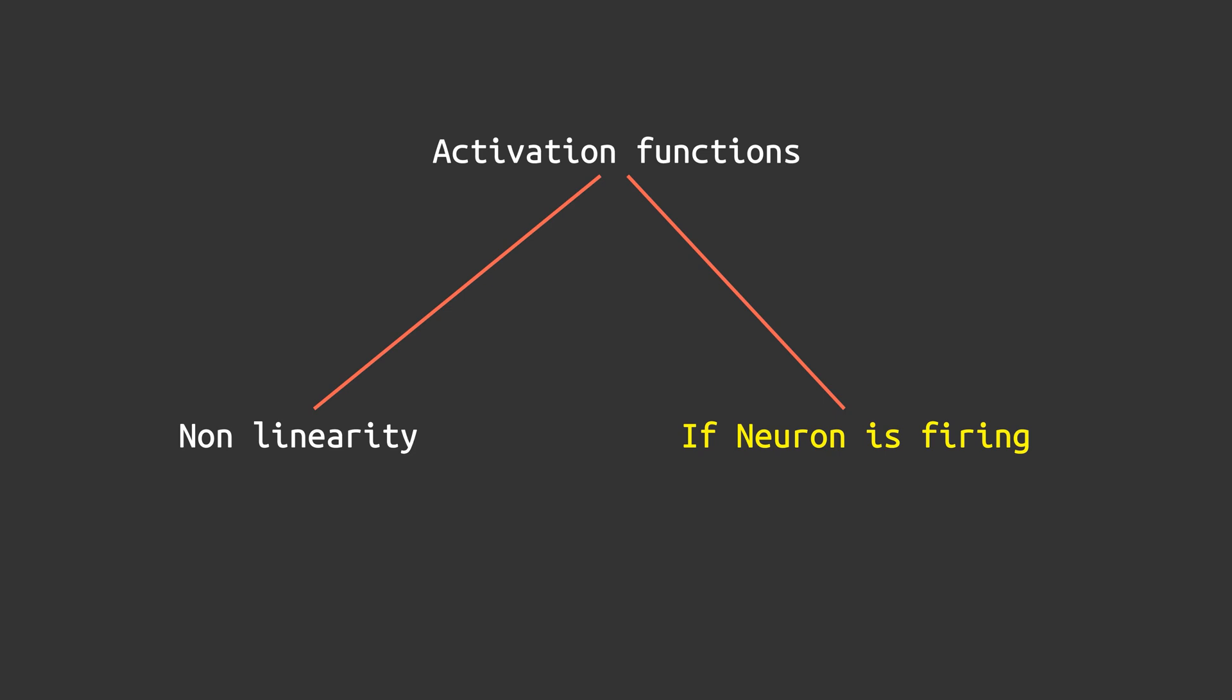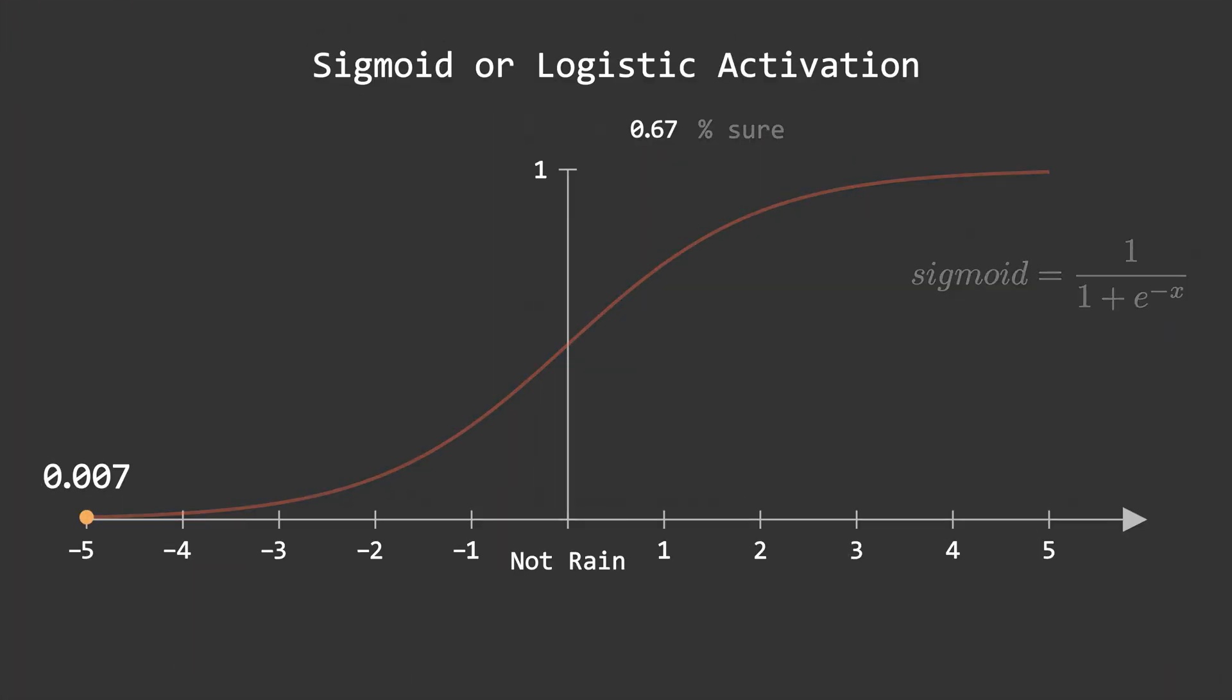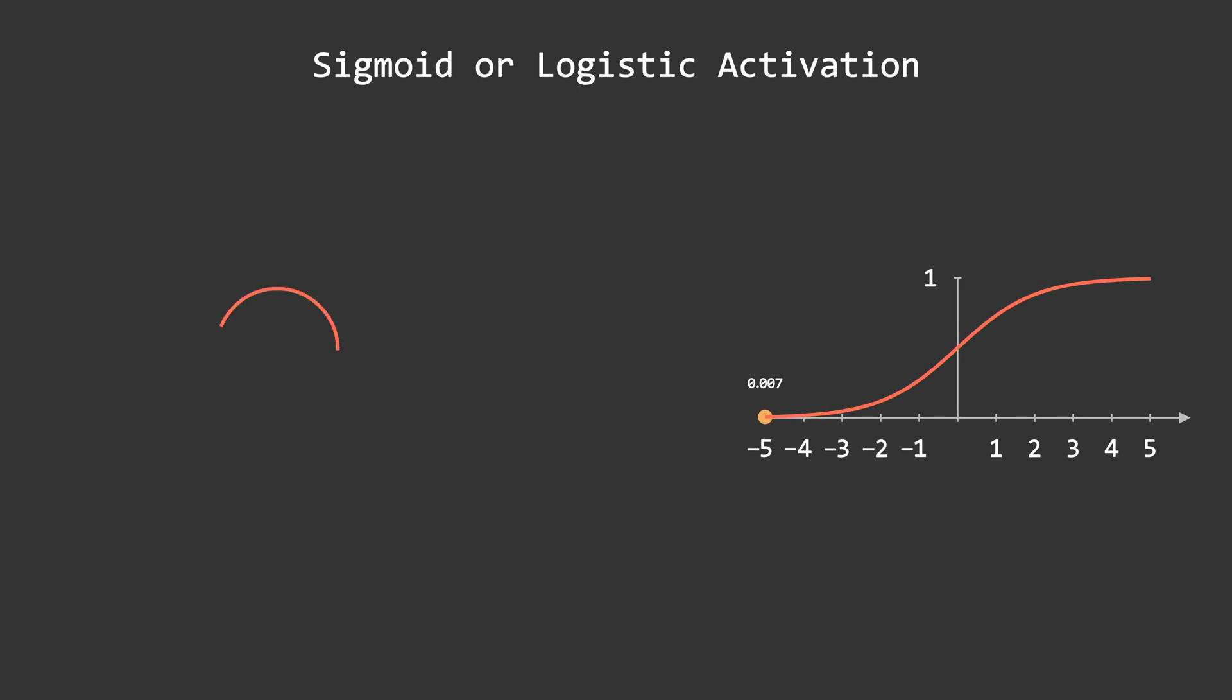The second use of activation functions was to see if a particular neuron is firing or not. We can tell that using sigmoid activation. Let's make a simple neuron that accepts one feature as input and outputs the prediction. Currently, the value of the sigmoid is at 0, that means this neuron is not firing at all. If you make it one, that means the neuron is firing with its maximum strength, and that's how it works.